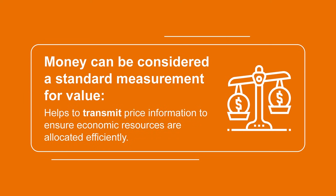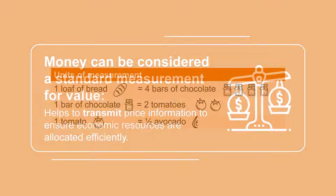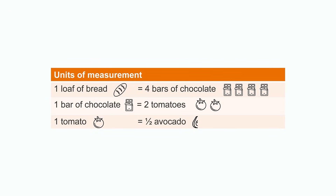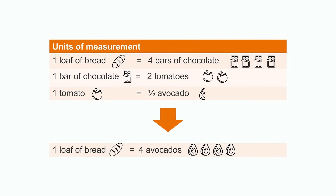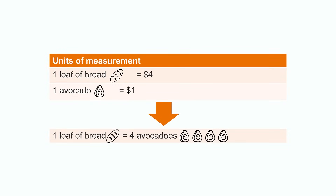Having a standardized unit of account is incredibly convenient for transmitting price information to ensure that economic resources are allocated efficiently. Imagine if goods are quoted in different units of measurement instead of dollar terms. For example, if a loaf of bread is worth four bars of chocolate, a bar of chocolate is worth two tomatoes, and a tomato is worth half an avocado — if I asked you to figure out the relative value of bread versus avocado, you'd need to do a couple of conversions to calculate that a loaf of bread is worth four avocados. But if all items are quoted in dollars, a loaf of bread would be four dollars and an avocado one dollar, and it takes no time at all to figure out that a loaf of bread is worth four avocados.